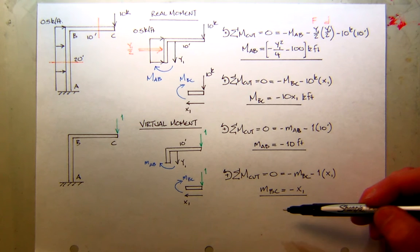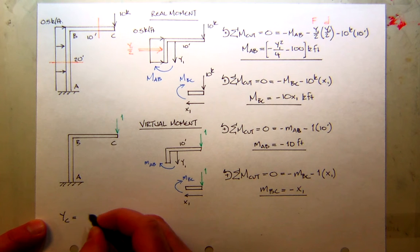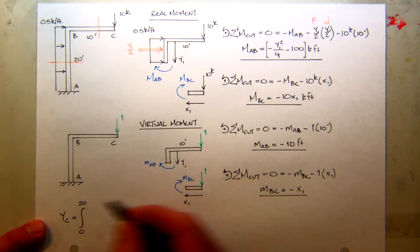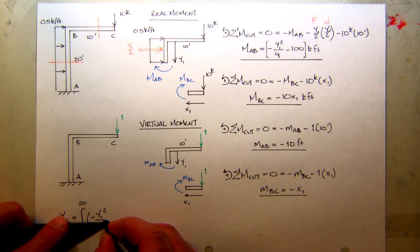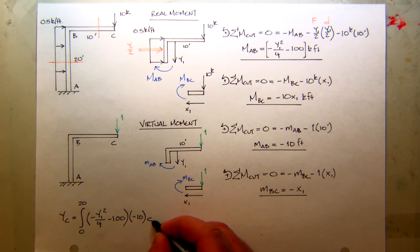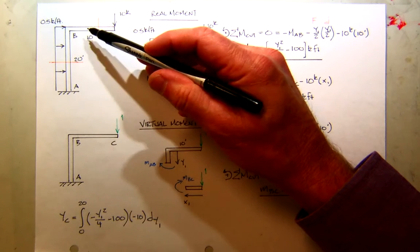So now I've got real moments and I've got virtual moments. All I have to do is match them up. So my displacement at C is going to be the integral of what? Well, from A to B, I'm going from here down. That's a distance of 20. So I'm going to go from 0 to 20. The real moment in AB, which is minus Y1 squared over 4 minus 100, times the virtual moment in AB, which is minus 10. And that will be integrated DY1. So that takes care of the energy in the column AB. That's the length of AB. We're starting at the top at B and going down to A. Either way, that's the length of 20.